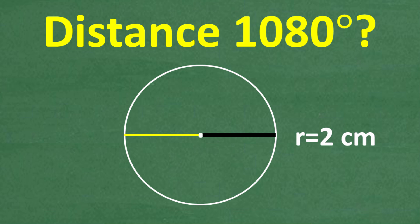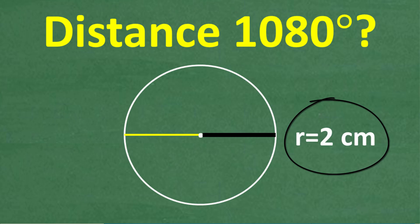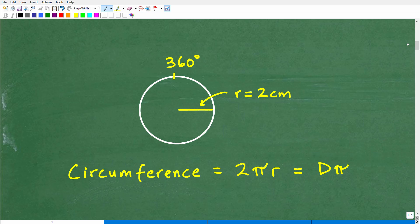1,080 degrees around this circle covers what distance? That is the question for this particular video. We have a circle, and we're being told some information: R is equal to 2 centimeters. This is all you need to get the right answer. Let's go ahead and get into the solution.